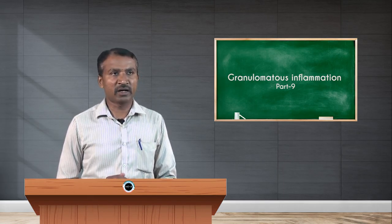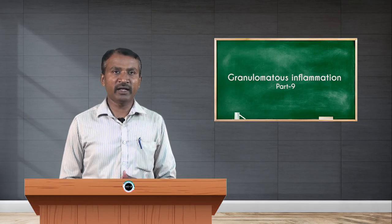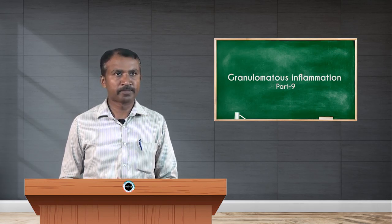Clinical features include productive cough with hemoptysis — that is, blood-tinged sputum — pulmonary effusion, dyspnea, and orthopnea. Pulmonary effusion is fluid collection in the pleural cavity; dyspnea is difficulty breathing; orthopnea is breathlessness during ambulatory movements. Chest X-ray may show typical apical changes like pleural effusion, nodularity, and miliary or diffuse infiltrates in the lung parenchyma. Systemic features include fever, night sweats, fatigue, and loss of weight and appetite.